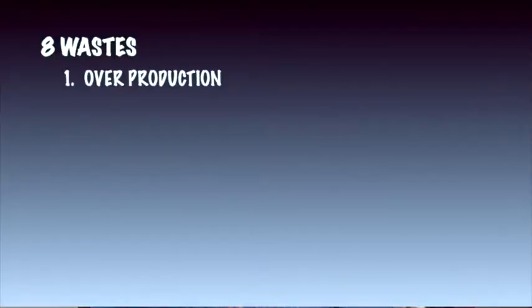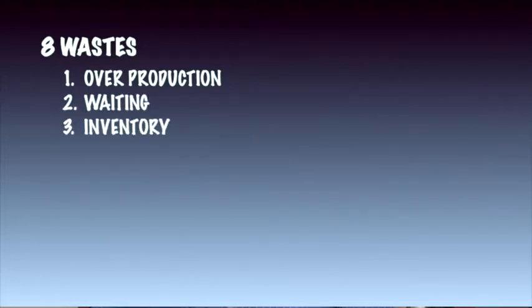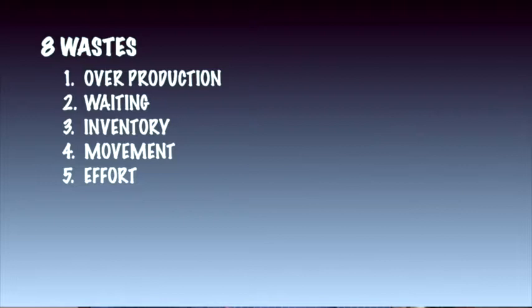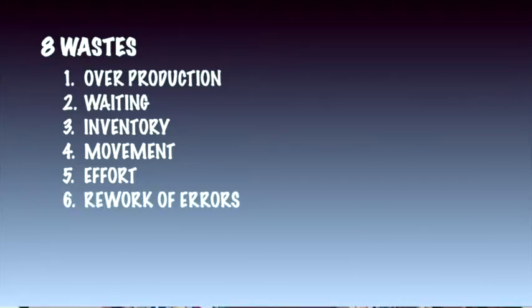In this unit, we will talk in detail about waste — both seeing waste on your projects and ways to eliminate it. There are eight wastes found in the Toyota Production System. They are: one, overproduction; two, waiting; three, inventory; four, movement; five, effort; six, rework or errors; seven, processing; and eight, underutilization of talent.